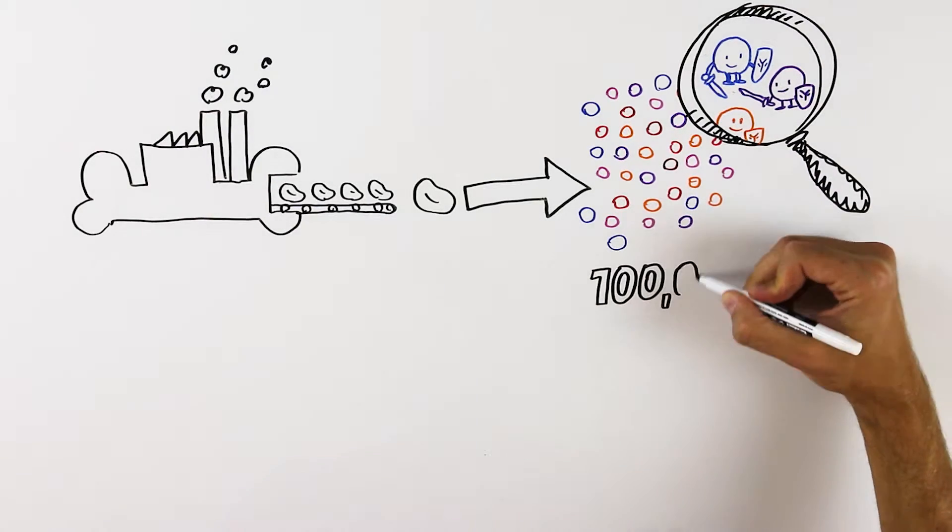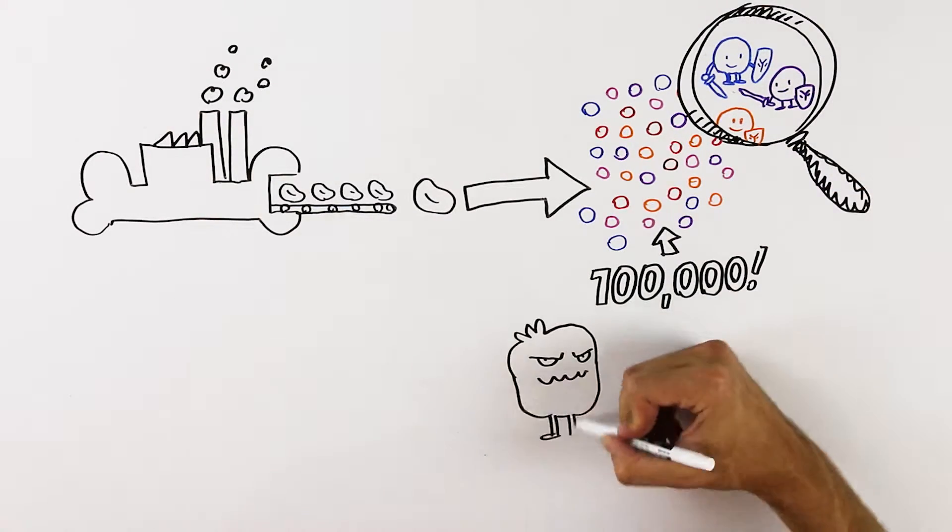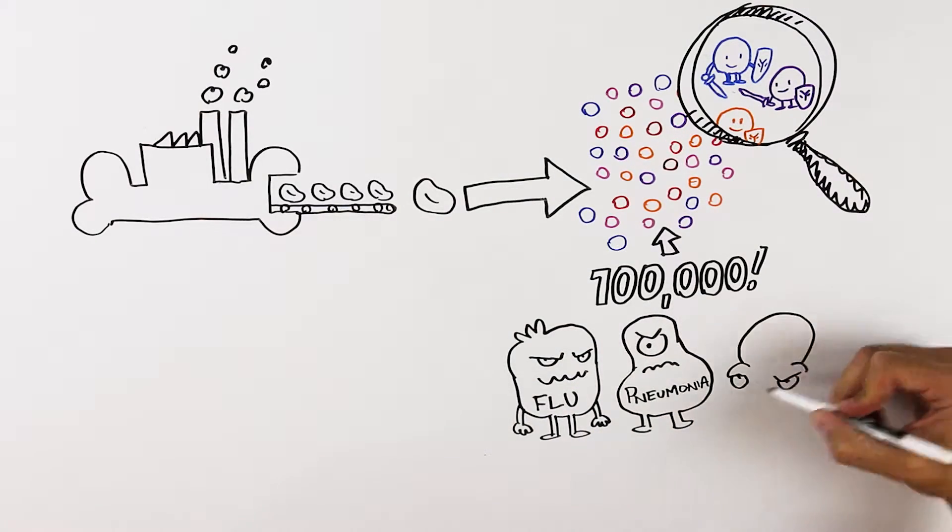Each of us has over 100,000 different kinds of antibodies, so we can fight off diseases like the flu, pneumonia, and even cancer.